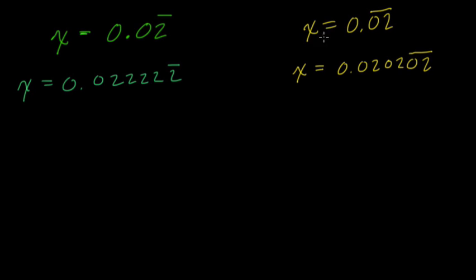Well on the right here, with 0.02 repeating, we would set x equal to 0.02, our decimal, and multiply by 100 as we've been doing. So here we move our decimal twice to the right, and we get 2.02 repeating.